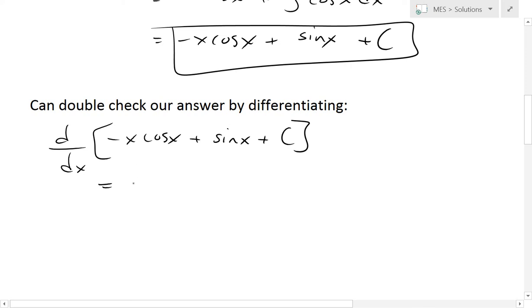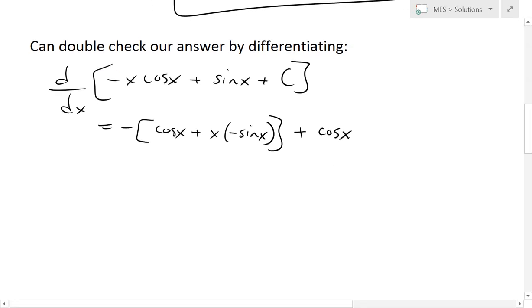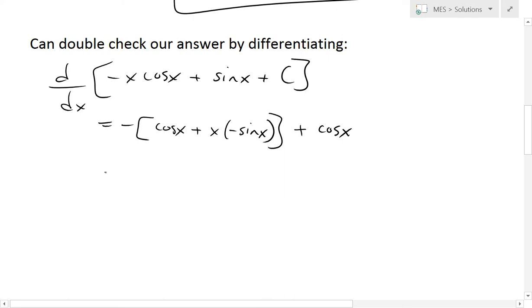We have to apply the product rule in this case. The derivative of negative x—I'll just take the negative out—derivative of x is one, so we add cos(x), then plus x times the derivative of cos(x), which is negative sin(x). Now we add the derivative of sin(x), which is cos(x), and the derivative of c, the constant, is just zero.